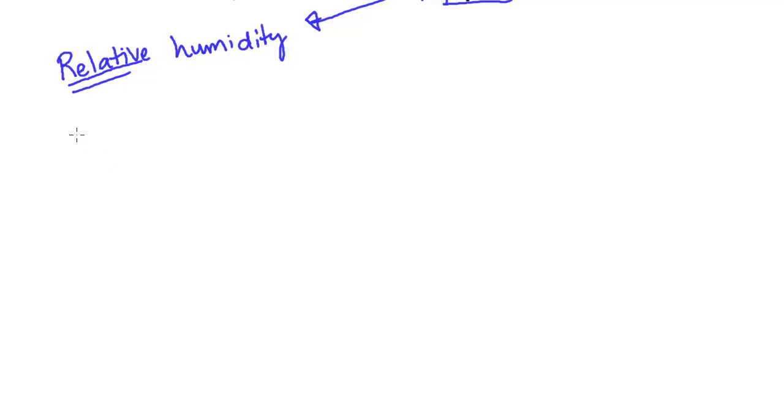So let's get a little more formal about it. Relative humidity, we'll usually use this Greek letter phi. And we'll define it as the mass of the vapor divided by the mass of the vapor when we're saturated. And that is a pretty good way to go about it.